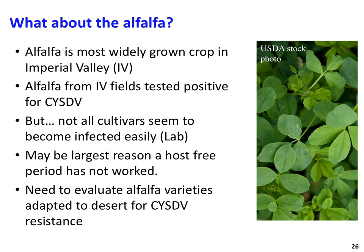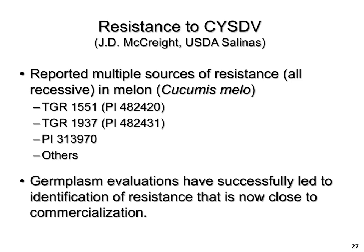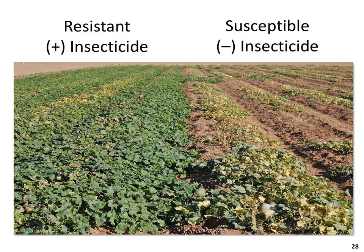One of the best means to control these new viruses is through the development of resistant varieties. Several sources of resistance have been identified in melon for control of CYSDV that are close to commercialization, and much of this work was developed in the Imperial Valley during the fall melon season. The large populations of whiteflies still necessitate insecticidal control to prevent plant death due to feeding damage, but when combined with resistance, the crop performs very well. The quality and availability of resistance has improved considerably in recent years.